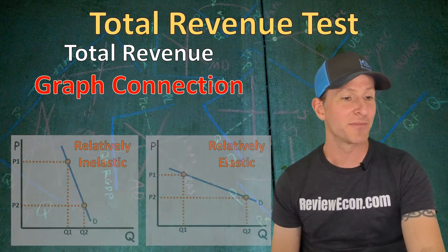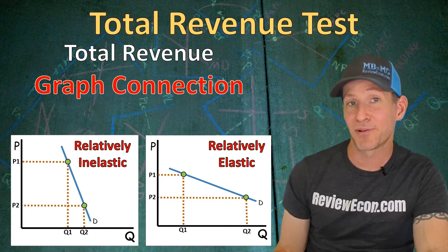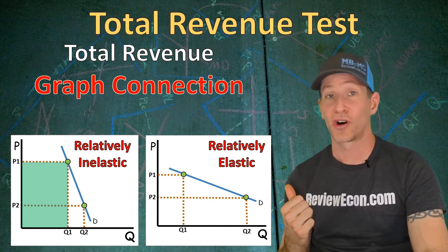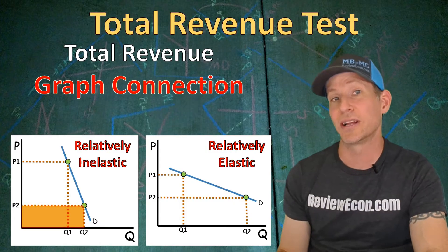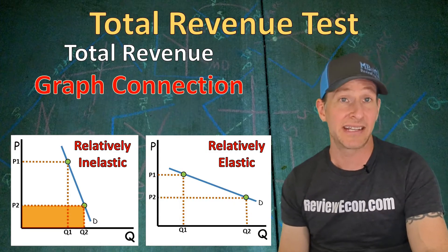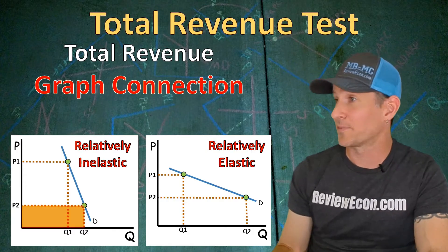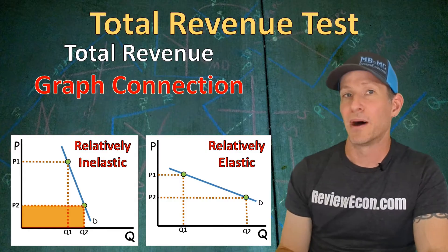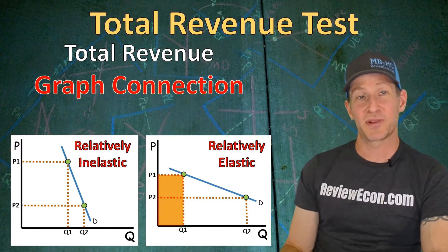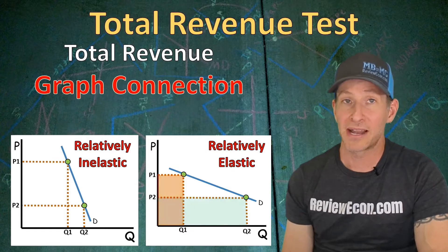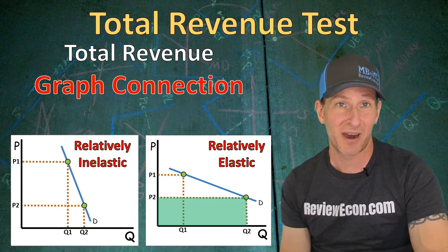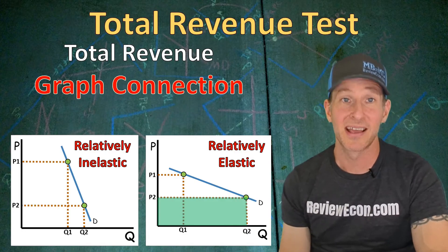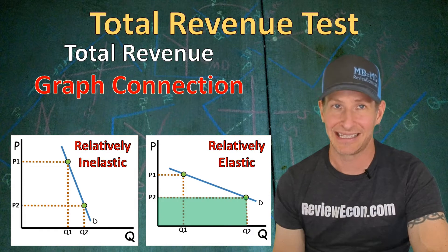Looking at the shaped curves, at the high price we have a large amount of total revenue, and as the price falls, the total revenue box shrinks. Since the price decrease came with a decrease in total revenue, the price elasticity of that demand curve is relatively inelastic through that price range. But on our relatively elastic curve, at the high price we have a low amount of total revenue, and at a lower price the total revenue box actually increases — so that demand curve is relatively elastic.